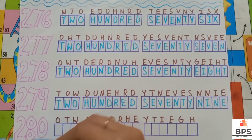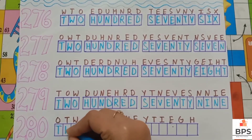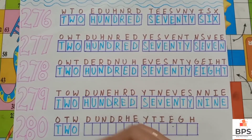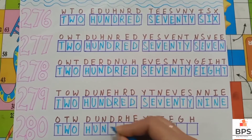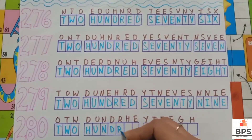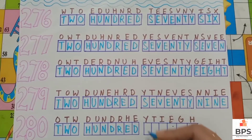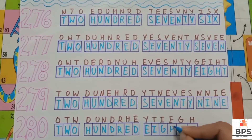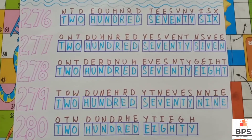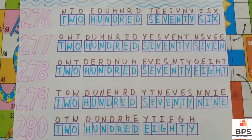280: T, W, O, 2, H, U, N, D, R, E, D, 100, E, I, G, H, T, Y, 80. 280. Thank you.